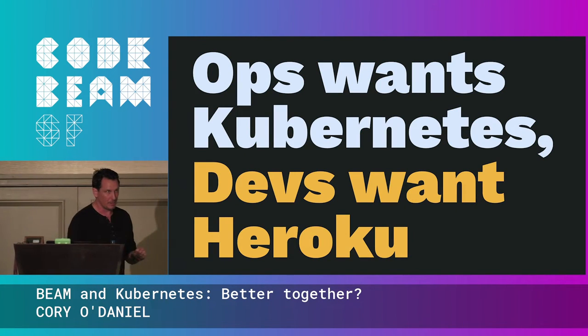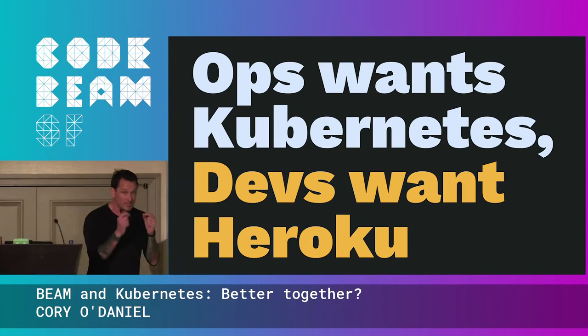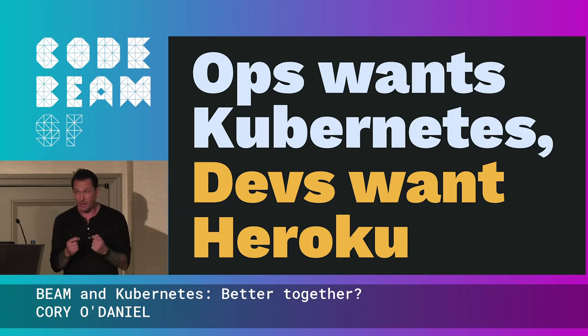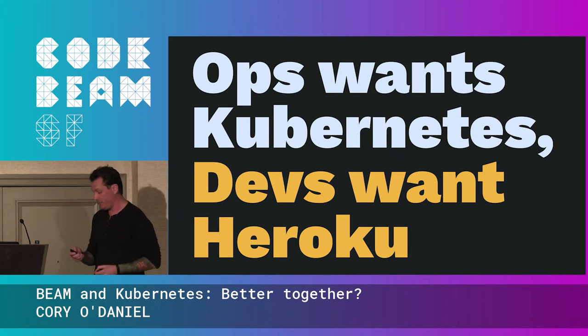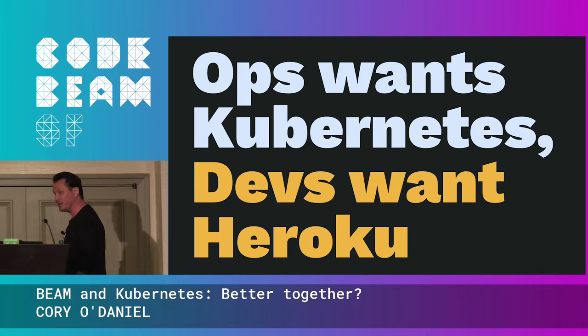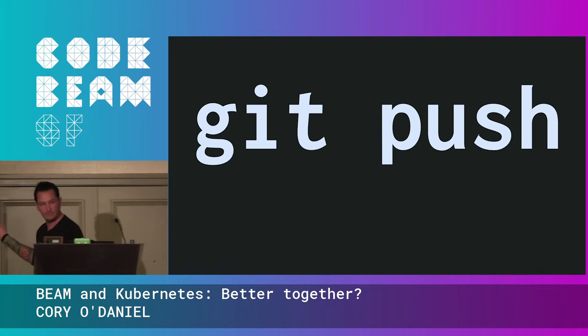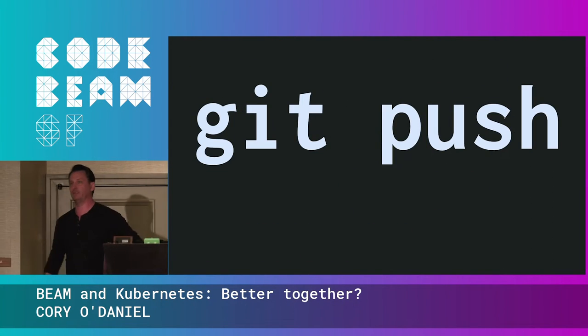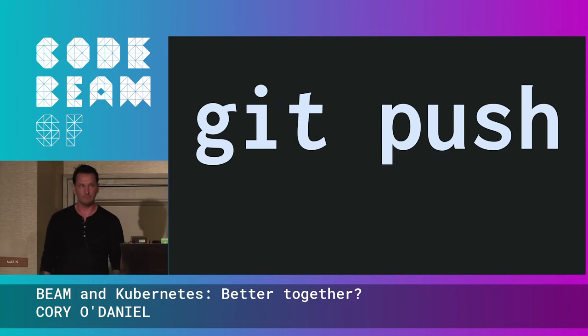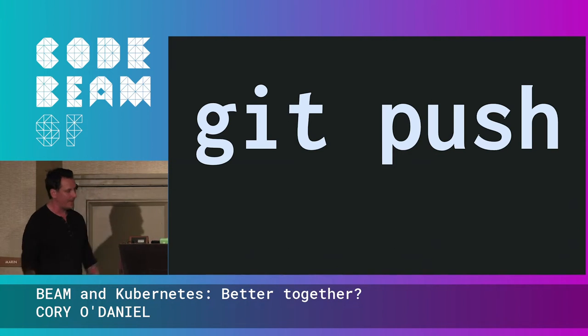Operations wants Kubernetes. Developers want Heroku. If you want to see what a true declarative interface looks like for deploying an application, that's what it looks like.